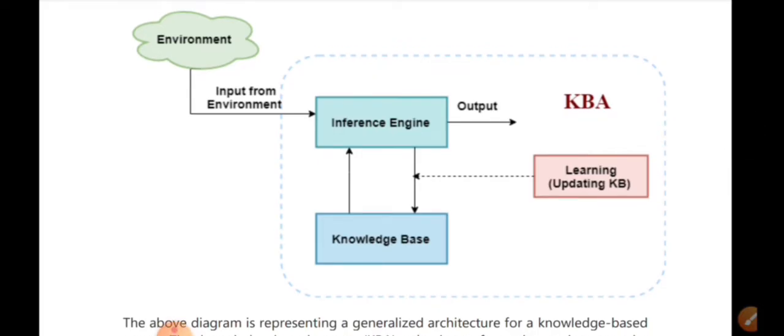KBA is a knowledge-based agent. We have an environment. We have a particular right input. We have KBA — the knowledge-based agent. We can try to change the inference agent. We have the answers to the knowledge-based agent. There is a solution to the right input. We have to take a look at the inference agent.